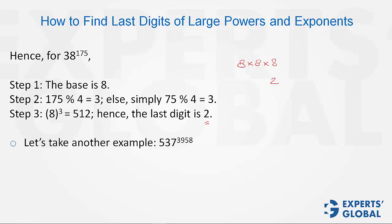Let's take another example. Step 1: base is 7. Step 2: remainder of 3958 with 4 is 2. Step 3: 7 squared is 49, so the answer is 9.